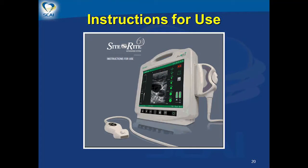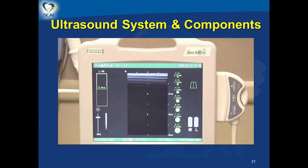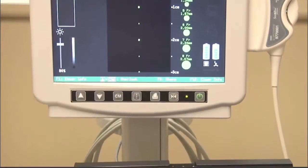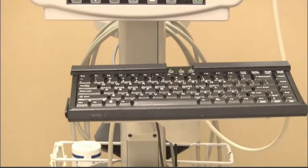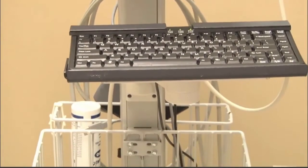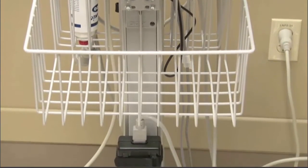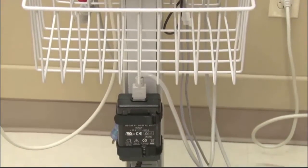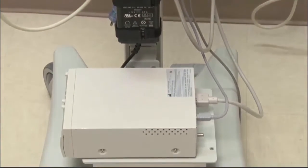Briefly reviewing the SITRITE ultrasound system and components: the scanner is mounted on a roll stand with the probe on the sidearm, keyboard tray, and one large storage basket for supplies. There is an external battery and adapter along with a printer. Large wheels help to negotiate elevator transitions and other obstacles.